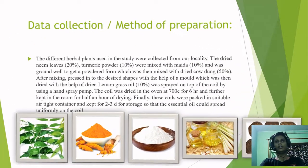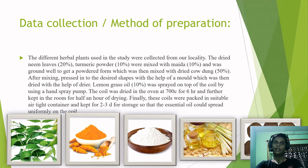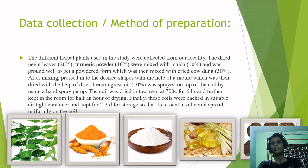For data collection and method of preparation, herbal plants were collected from the local area. Dried neem leaves were taken at 20% and turmeric powder at 10%. These were mixed with maida and ground to a powdered form, then mixed with cow dung and pressed into desired shapes using a mold. The coil was then dried using a dryer. Lemongrass oil was sprayed on using a hand spray. The coil was dried in an oven at 700°C for six hours and then kept in a room for half an hour of further drying.